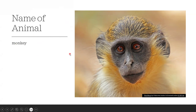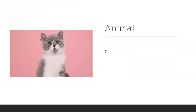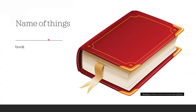Now, name of animal. For example, monkey — this is a monkey, and monkey is an animal. This is a cat, and cat is an animal. This is a dog, and dog is an animal. Dog is the name of an animal.